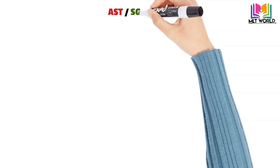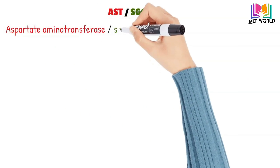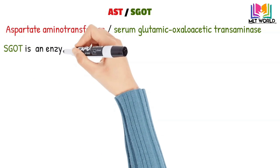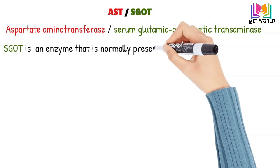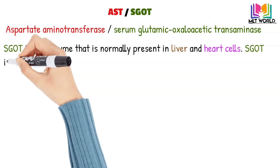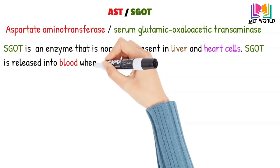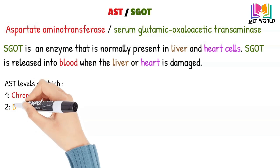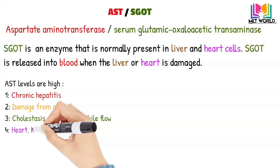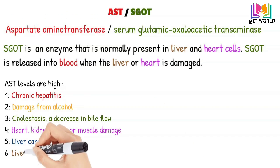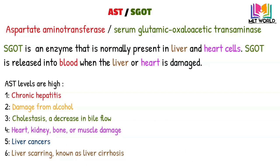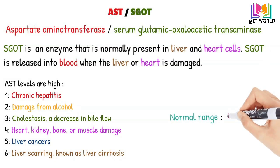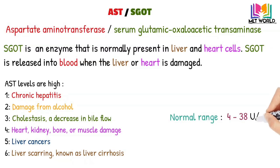Next is AST, or aspartate transaminase, also called SGOT — serum glutamic oxaloacetic transaminase. SGOT is not only produced by the liver but also by muscles, heart cells, and skeletal muscles. So SGOT is released into the blood when there is liver damage or heart damage. AST levels are elevated in chronic hepatitis, alcohol-related damage, cholestasis, heart and kidney and bone muscle damage, liver cancers, and liver cirrhosis. Since AST is present in both liver and heart cells, ALT is more specific than AST. Normal range of SGOT is 4 to 38 IU/L.